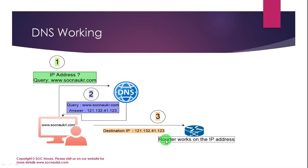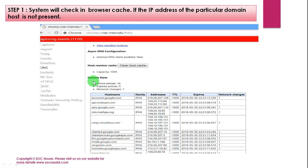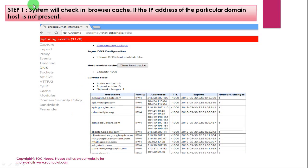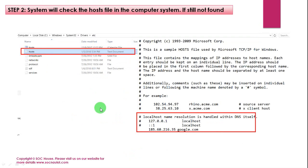When the user types or enters the domain name in the browser, the system checks for the IP address of that domain in the local cache of the browser. If not found, the system will check in the hosts file of the operating system.